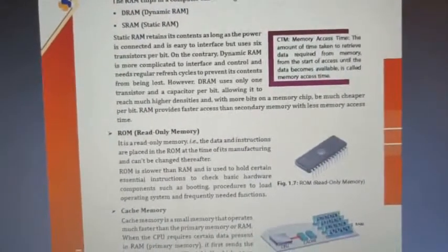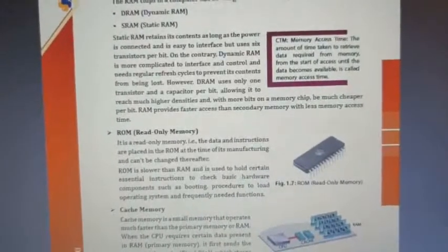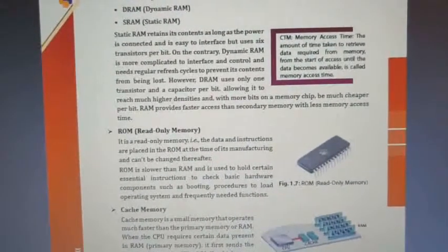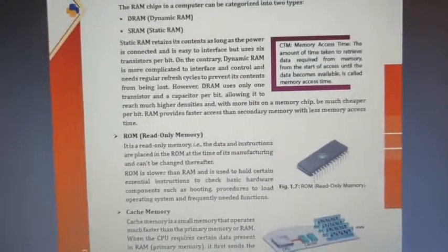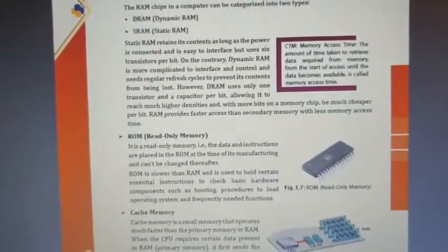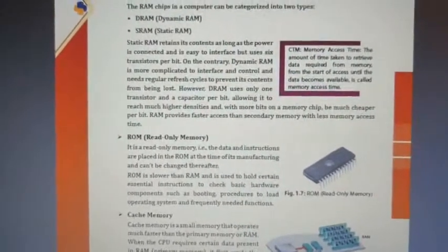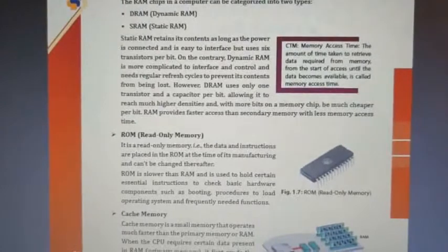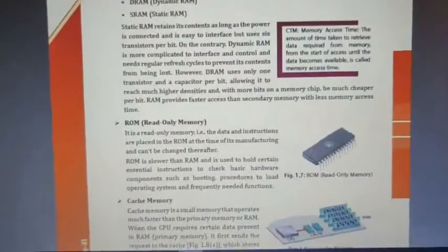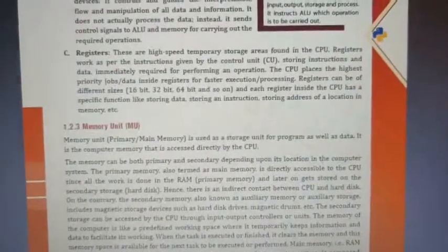ROM is slower than RAM. It is used to hold certain essential instructions to check basic hardware components such as the booting procedure to load the operating system and frequently needed functions. RAM is volatile and ROM is non-volatile. If the system turns off while working via ROM, the data is saved, unlike RAM where all unsaved data is lost.